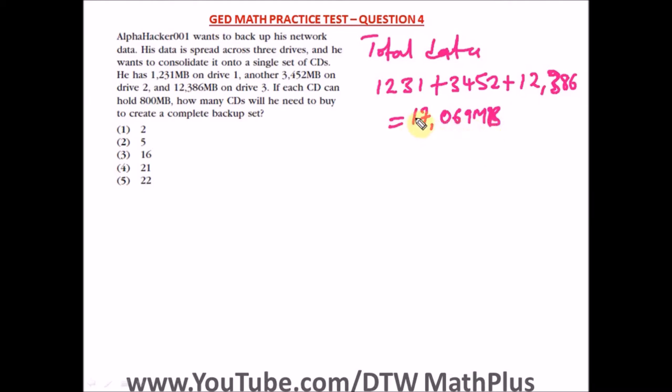Now we have to divide this by 800. So just draw the division line here. When you divide by 800, punching your calculator, you're going to get 21.336.